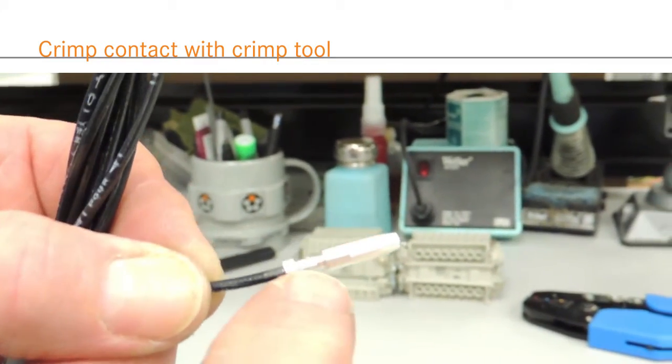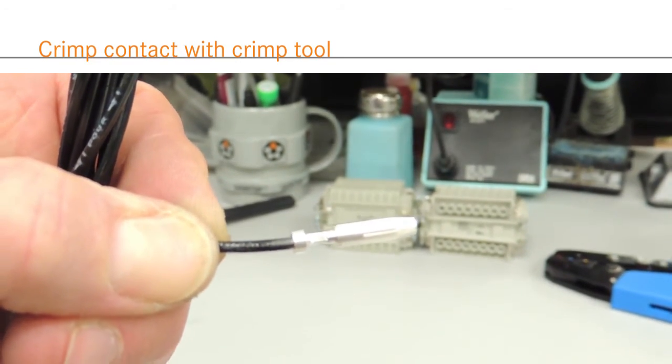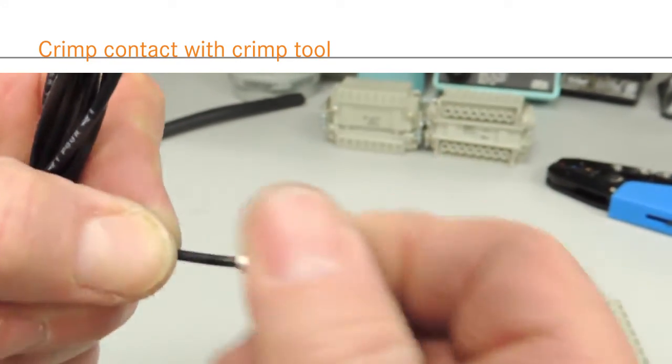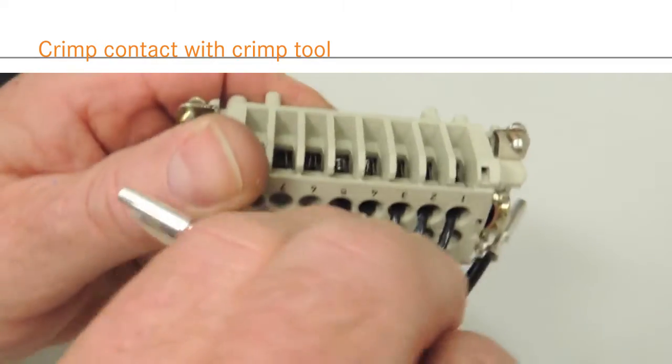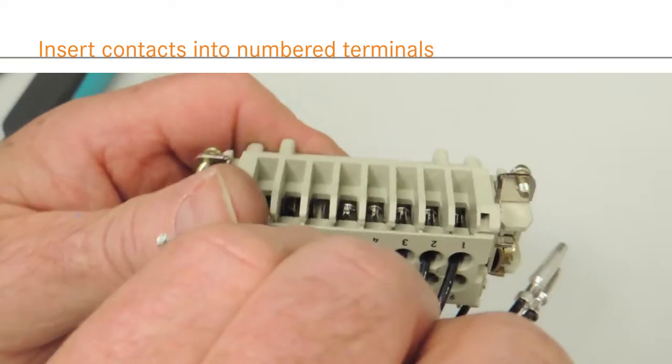Crimp contacts can be either stamped and formed or machined and are plated in either silver or gold to resist corrosion and improve conductivity. Silver has the highest electrical conductivity of any metal and it is the most cost-effective. Gold contacts are ideal for low current and low voltage signal transmission.